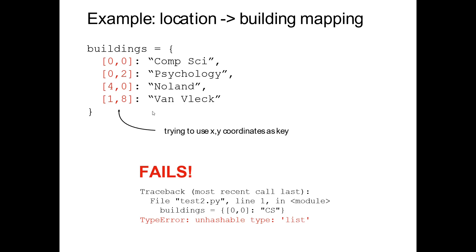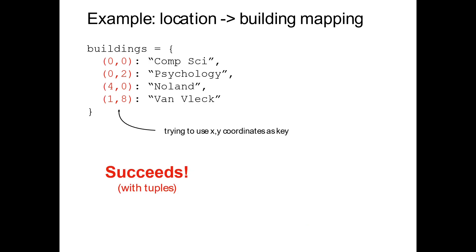Some use cases also require immutability — dictionary keys cannot be mutable, so we cannot use a list as a dictionary key. For example, if I wanted to use XY coordinates as keys — psychology building is two blocks north, Noland is four blocks to the east — this won't work with a list. The error we get is 'unhashable type: list.' The solution is to use the immutable tuple data type, which works almost exactly like a list except I can't change it, making it valid as a dictionary key.